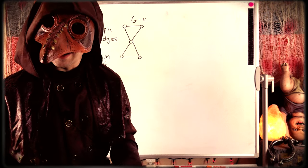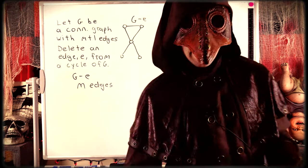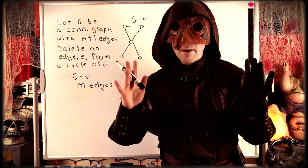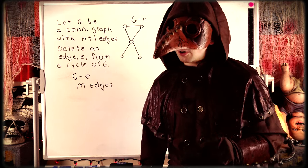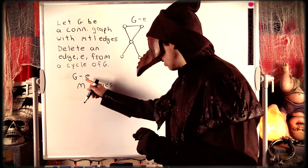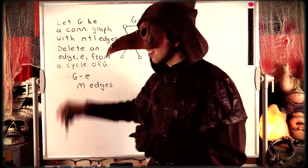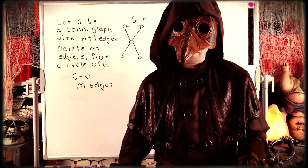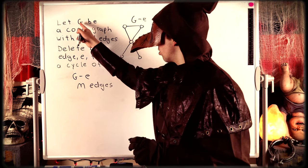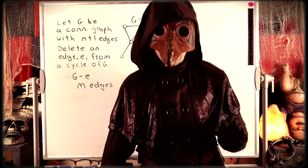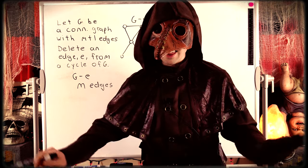Now we can use our induction hypothesis. Because G minus e has m edges and is still connected, we can apply our induction hypothesis, which tells us that G minus e must have a spanning tree — a subgraph of G minus e that is connected, has no cycles, and contains all vertices of G minus e. But the vertex set of G minus e is the same as the vertex set of G, because all we did was delete an edge. And since the edge set of G minus e is a subset of the edge set of G, the spanning tree of G minus e must also exist in G, and thus we are done.